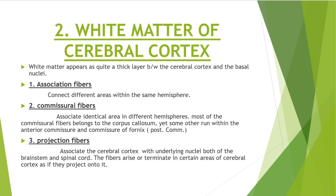Next we study the white matter of the cerebral hemispheres. The white matter appears as a quite thick layer between the cerebral cortex and the basal nuclei. It consists of nerve fibers arranged into three systems: association, commissural, and projection pathways. Association fibers connect different areas within the same hemisphere. Commissural fibers associate identical areas in different hemispheres. Projection fibers associate the cerebral cortex with underlying nuclei of both the brainstem and the spinal cord, arising or terminating in certain areas of the cerebral cortex as if they project onto it.